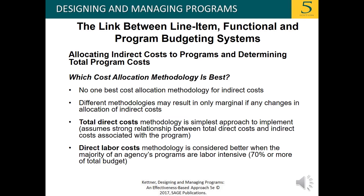After looking through these methodologies, which cost allocation methodology is best? There is no one best methodology for indirect costs. Different methodologies may result in only marginal, if any, change in the allocation of indirect costs. The total direct cost methodology is the simplest approach to implement, and it assumes a strong relationship between total direct cost and indirect costs associated with the program. The direct labor cost methodology is considered better when the majority of an agency's programs are labor intensive — 70% or more of the total budget.